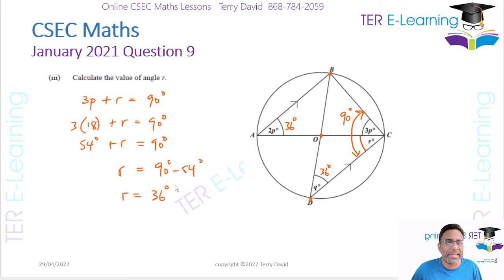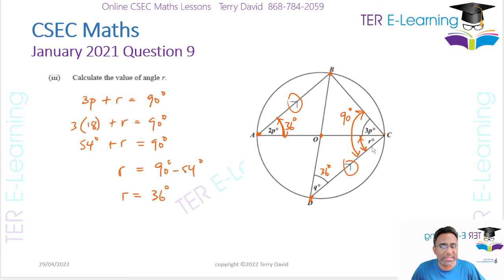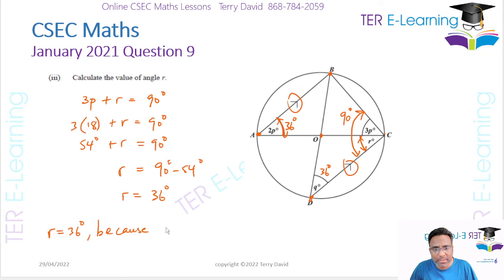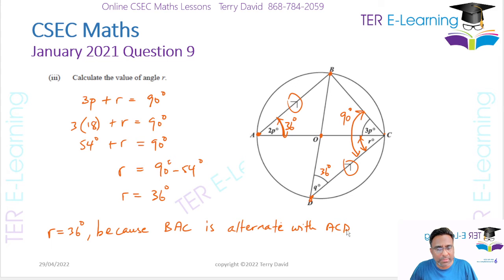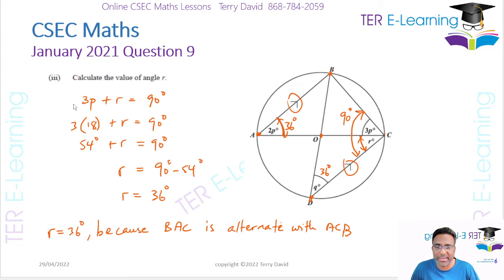There's an alternative way to do this. We know AB is parallel to CD as shown by the parallel line markers. Since angle BAC is 36 degrees, r is also 36 degrees. We can say r equals 36 degrees because angle BAC and angle ACR are alternate angles. So more than one way to work this out — you could have just used the alternate angles property directly.